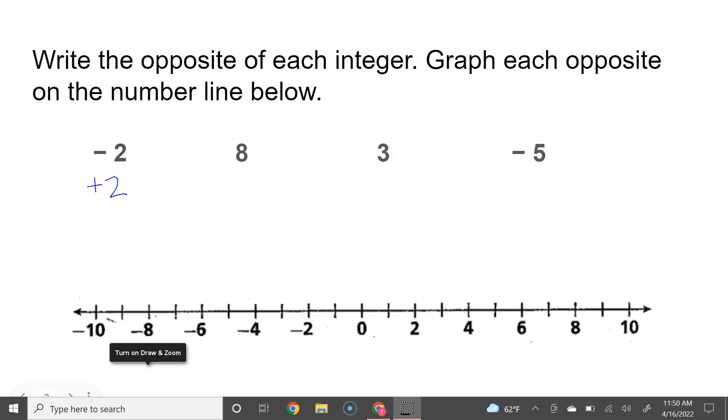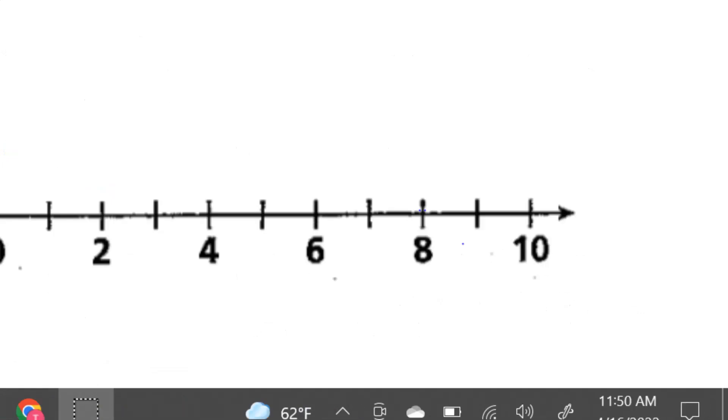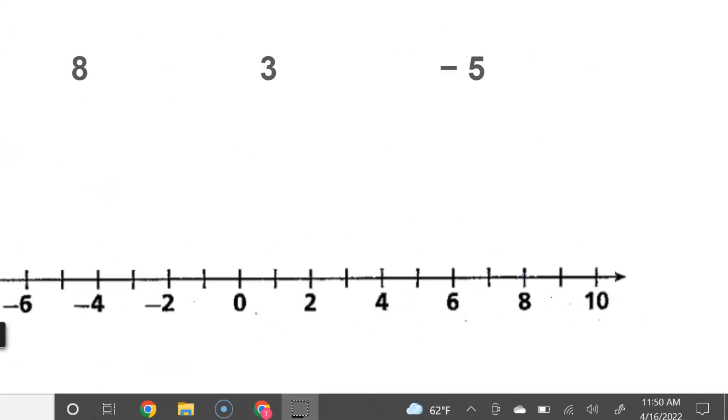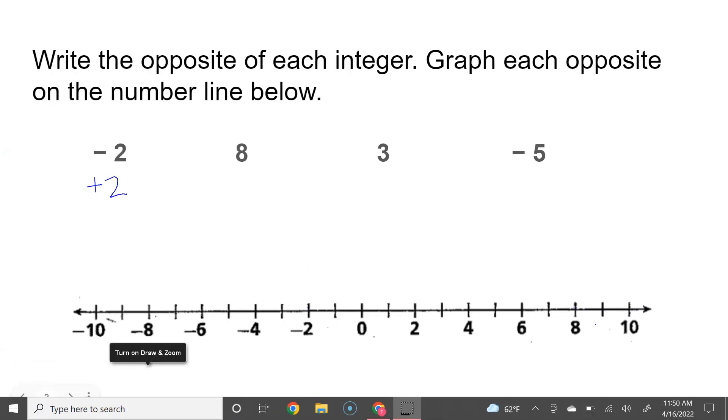If I'm looking at the integer 8 and it says write the opposite and graph it, I know that 8 is my integer here. And I know that the opposite of 8 will be a negative 8. And then I can graph that by writing a dot.